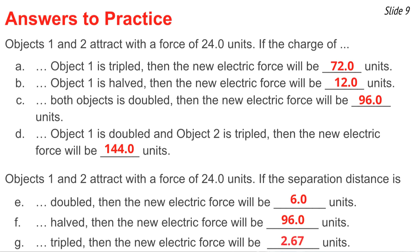The answer to G is roughly 2.67. What you must do is take the 24 and divide by 3 squared. You get 2.6666 repeating, which is close enough to 2.67.